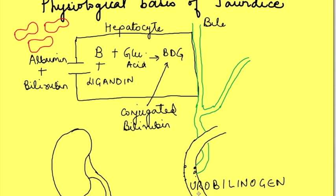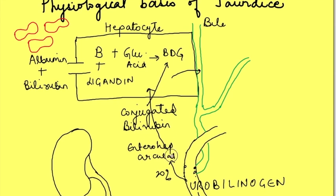Now 80% of this urobilinogen is excreted into the feces, while 20% is reabsorbed into the blood and re-enters the liver, where it is further excreted into the bile. This is known as enterohepatic circulation. Some amount of it also enters the kidney and is excreted from the kidney. Additionally, urobilinogen in feces gets reduced to a compound known as urobilin, which gives the brown color to the feces.